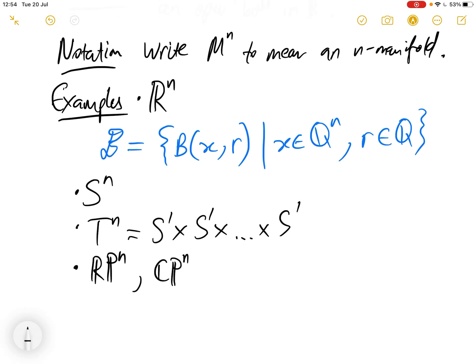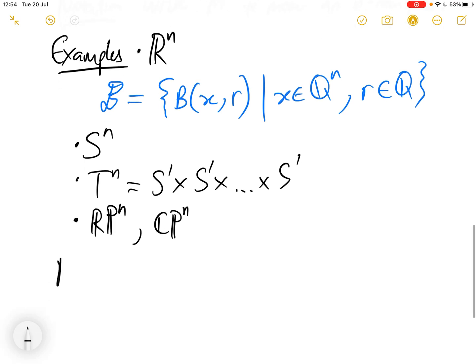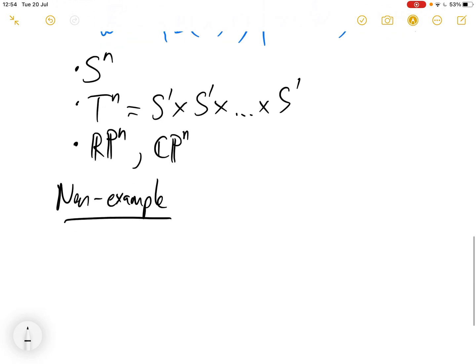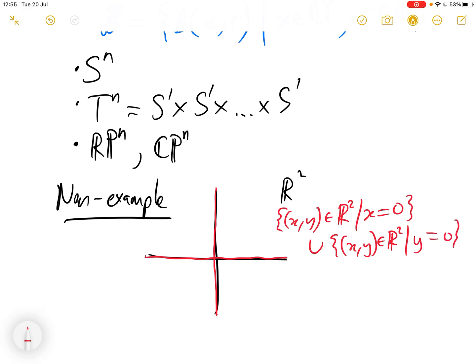And what would be something that isn't an example, a non-example? If we take in the plane, so here's R^2, if we take the union of the two coordinate axes - the union of the set of points in R^2 with x=0 and the set of points in R^2 where y=0 - the union of these two lines is not a manifold, and things go wrong at the origin.